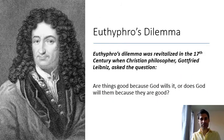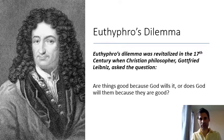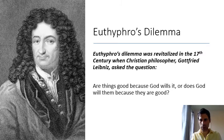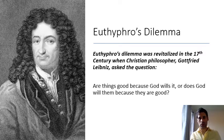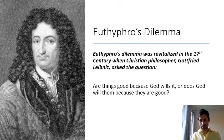Euthyphro's Dilemma was revitalized in the 17th century when Christian philosopher Gottfried Leibniz asked the question: are things good because God wills it? Or does God will them because they are good? So again, does nature determine goodness and then God just kind of likes those things? Or does God determine what is good and what is evil?